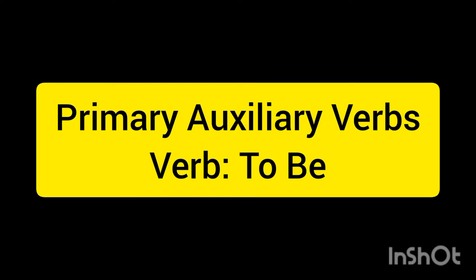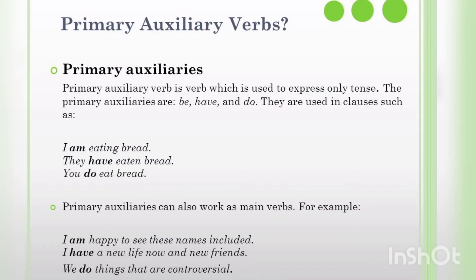Primary auxiliary verbs — verb to be. Primary auxiliary verbs are verbs which are used to express only tense. The primary auxiliary verbs are: be, have, and do. They are used in clauses such as: I am eating bread, They have eaten bread, You do eat bread. Primary auxiliary verbs can also work as main verbs.